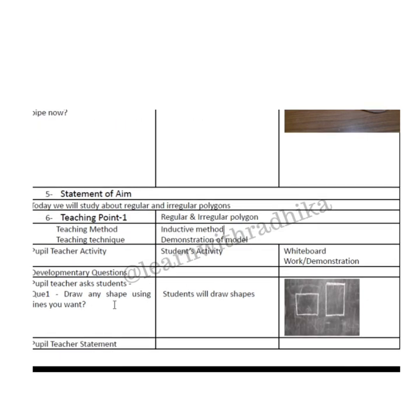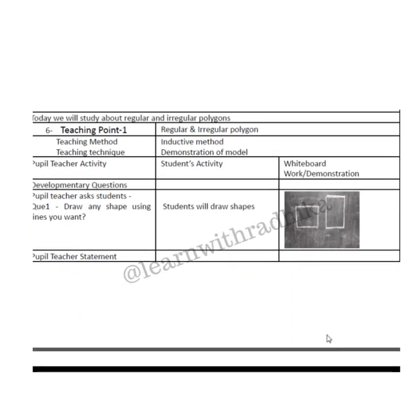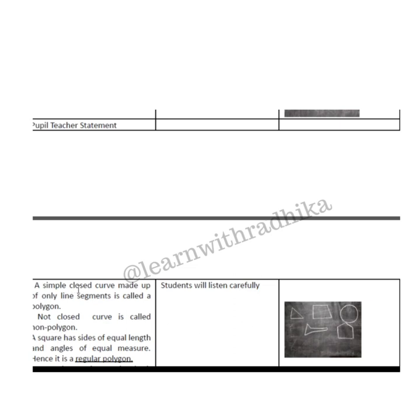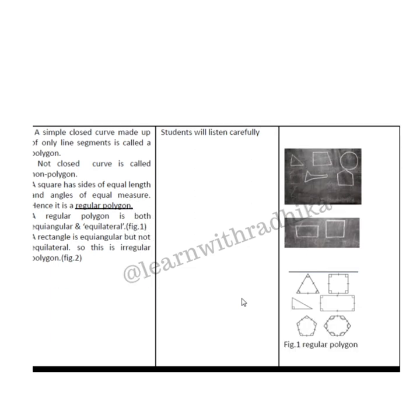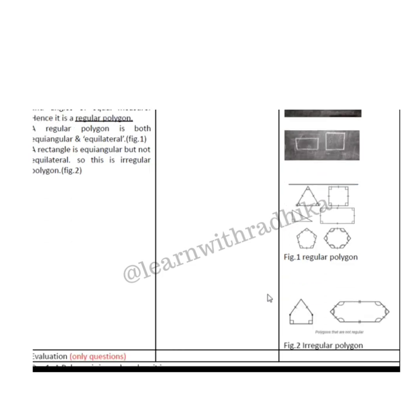Students are asked to draw any shape using lines they want. Then comes the pupil-teacher statement where students listen carefully. The pupil-teacher draws different irregular shapes, curved lines, and shapes that are not regular or equal in size. Then the pupil-teacher explains the difference between regular polygons and irregular polygons.